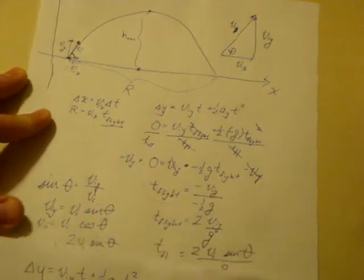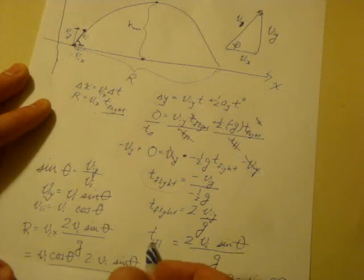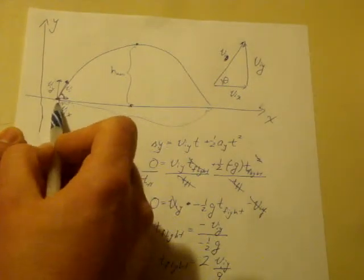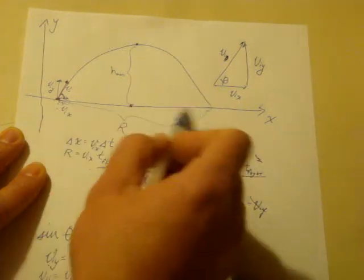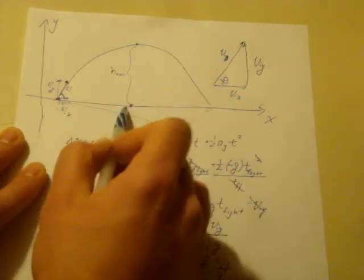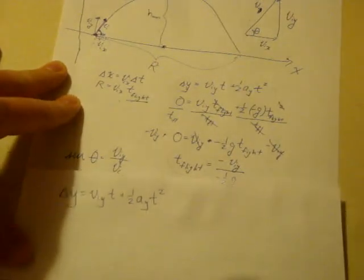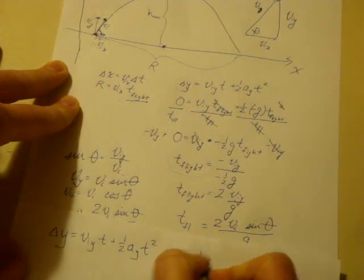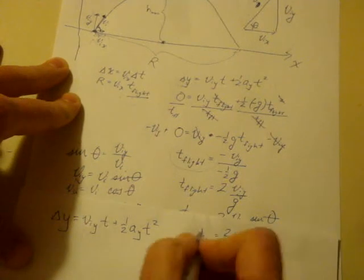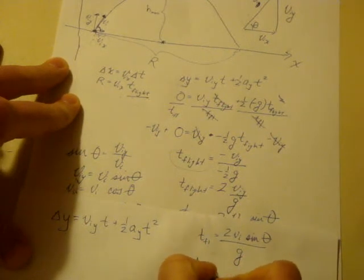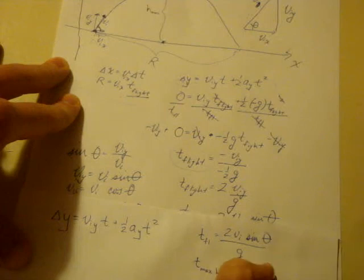The flight time is 2 times v_iy divided by g, or 2 times v_i sine theta over g, and that's the total flight time, how long it's in the air from its initial point to its final point. The maximum height occurs when that object is at exactly halfway between its starting point and ending point. Somewhere exactly halfway in the middle, we have the time at which it's at its maximum height. Got to bump the camera there. So here was the flight time equal to 2 times the initial velocity times sine theta divided by gravity. So what we want is half of that. We want the time to max height, and that's going to be equal to one half of this, or just v_i sine theta divided by g.